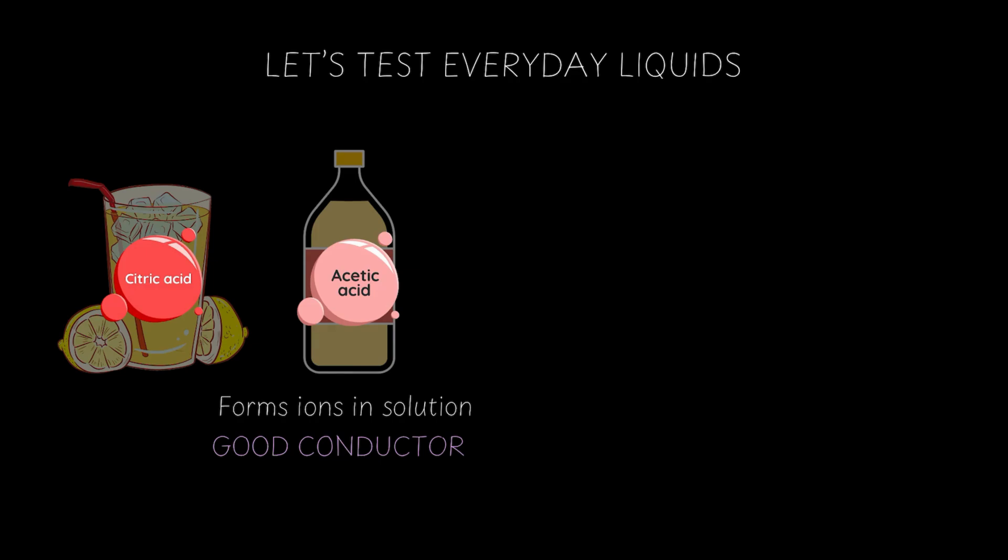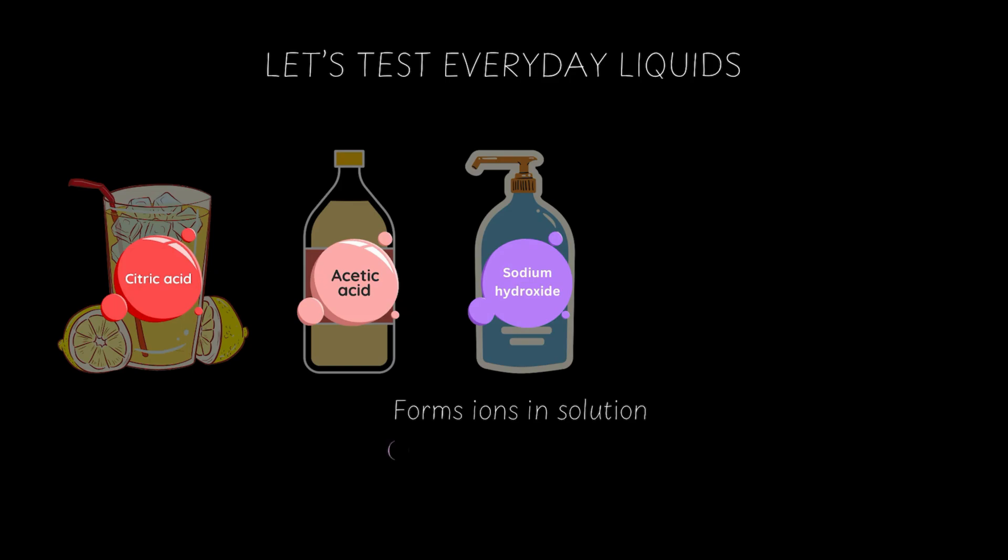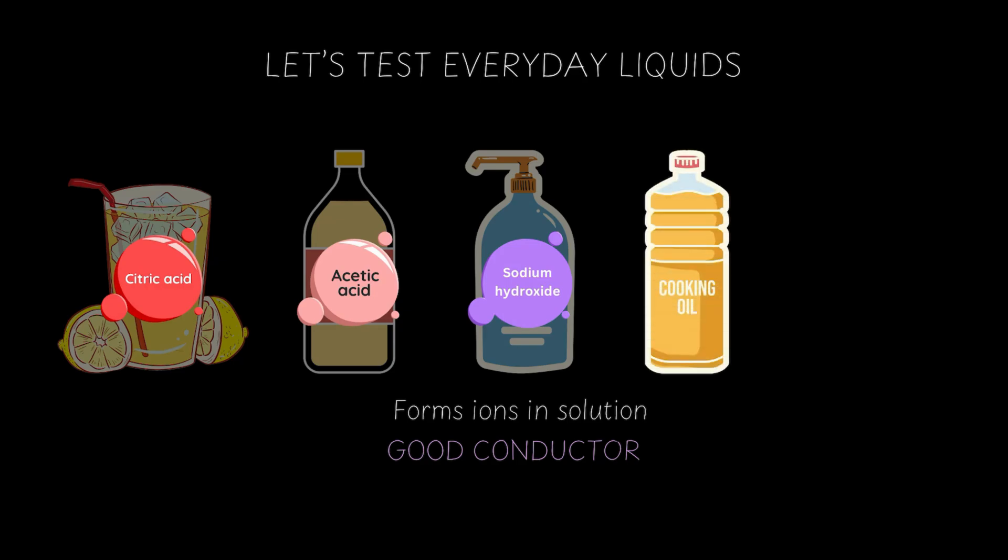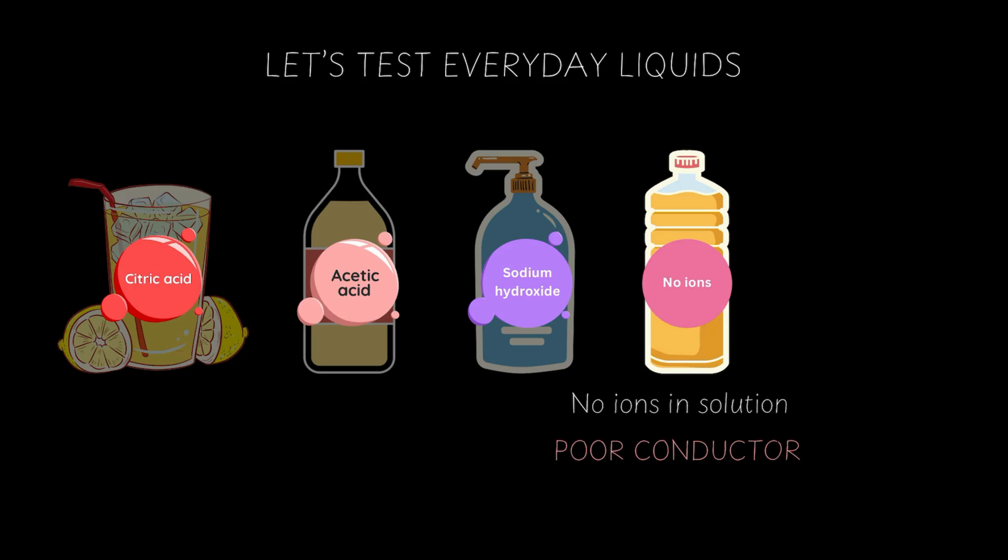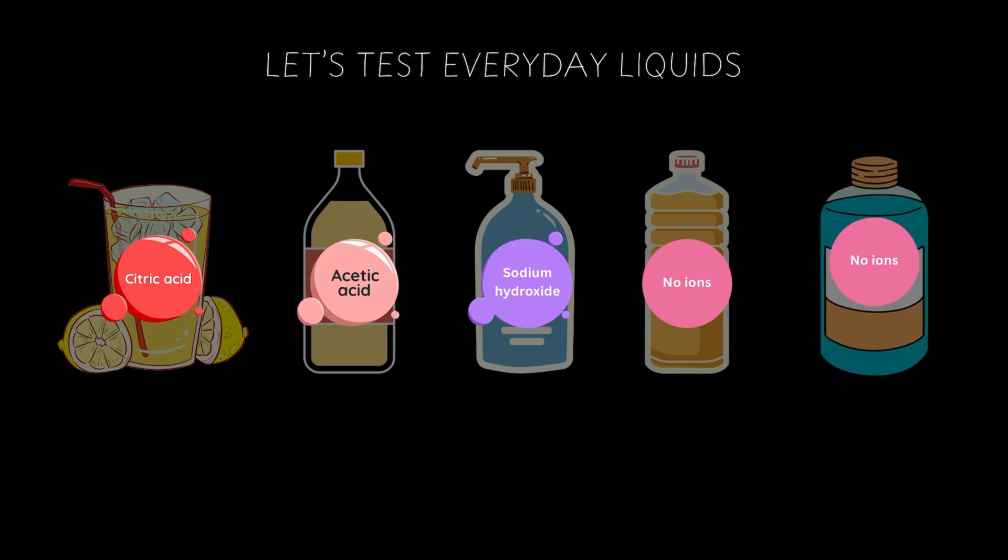Next, let's talk about soap solution. Soap is a base, so in solution it dissociates into ions. Again, it's a good conductor. Great. Moving on to cooking oil. Now, cooking oil does not have acids or bases or salts. So it's a poor conductor. And what about pure alcohol? No ions here either. So it's a poor conductor of electricity.